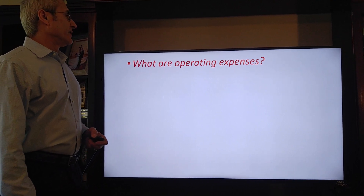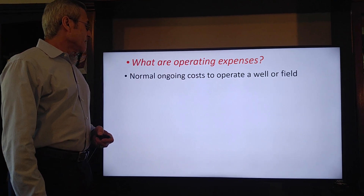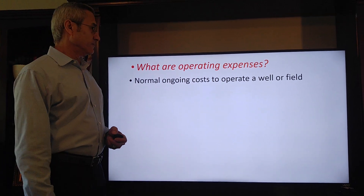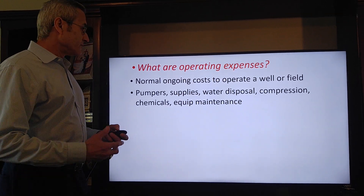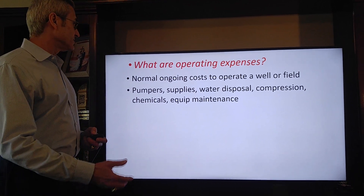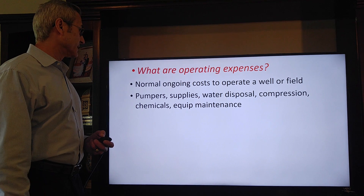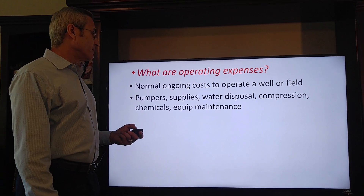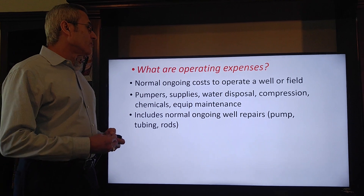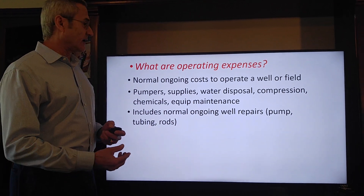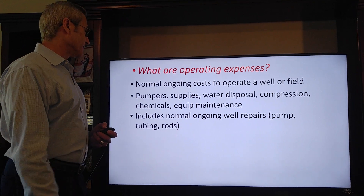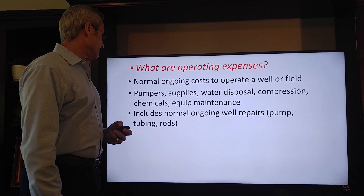So what are operating expenses? They are the normal ongoing costs to operate a well or field. This could include field personnel, pumpers, supplies, water disposal, compression — sometimes water disposal is a very large number — chemicals, and equipment maintenance. It could also include ongoing well repairs like pump change-outs, tubing and rods. That's a normal part of operating the field, not a one-time cost.